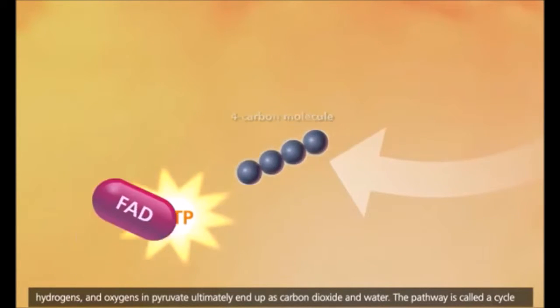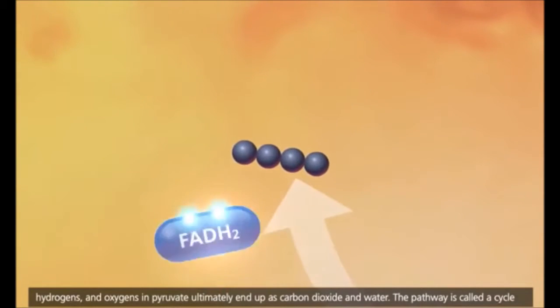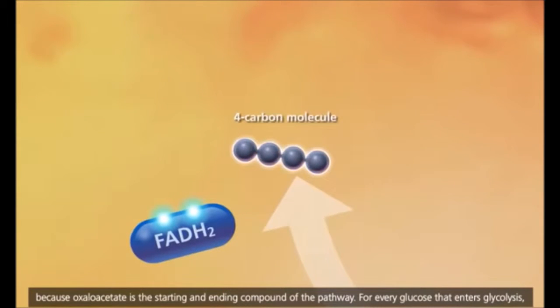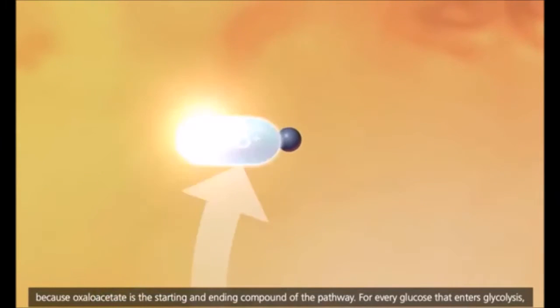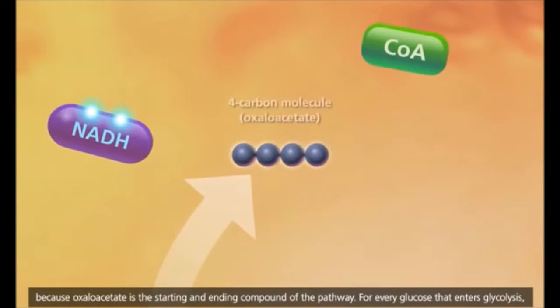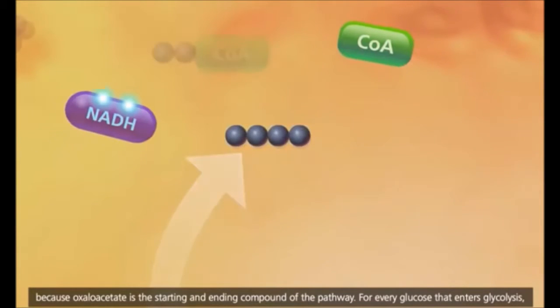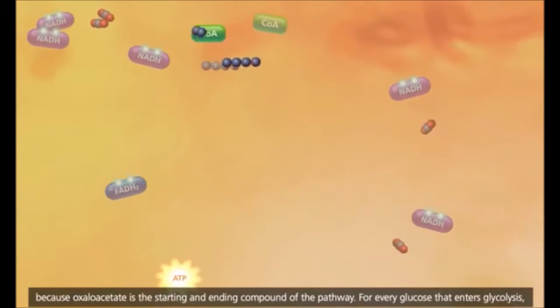A different type of electron carrier, FAD, is reduced to FADH2 in reaction 6. A final NAD+ molecule is reduced to NADH in reaction 8. The cycle finishes with the formation of oxaloacetate that will be used to start the next cycle.